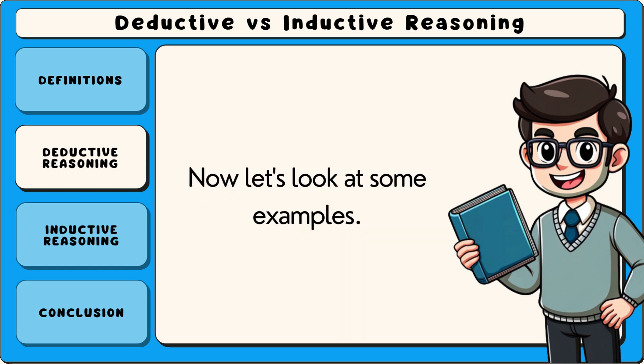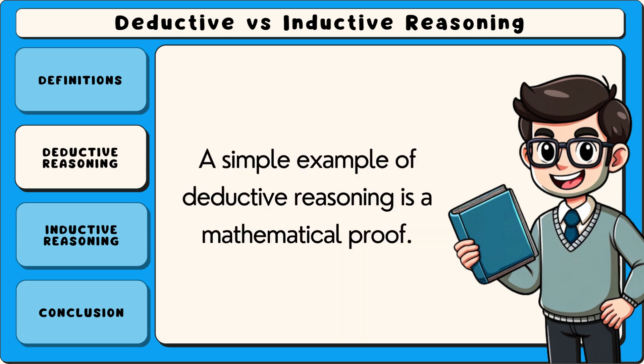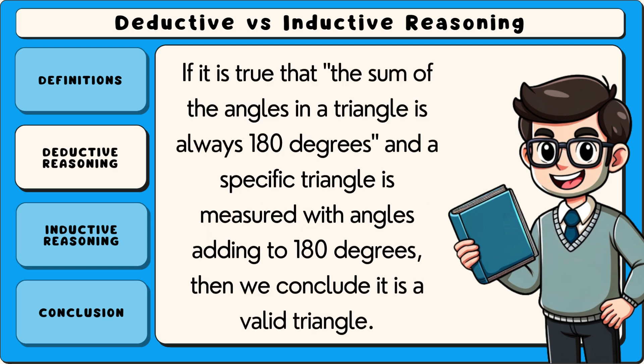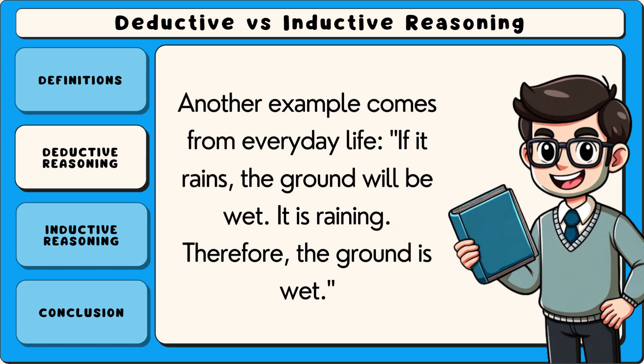A simple example of deductive reasoning is a mathematical proof. If it is true that the sum of the angles in a triangle is always 180 degrees, and a specific triangle is measured with angles adding to 180 degrees, then we conclude it is a valid triangle. Another example comes from everyday life: If it rains, the ground will be wet. It is raining. Therefore, the ground is wet.